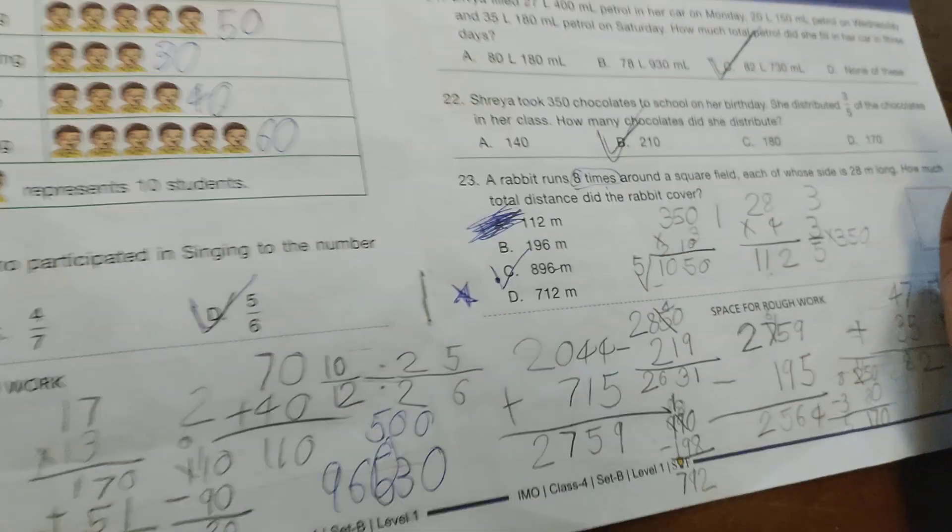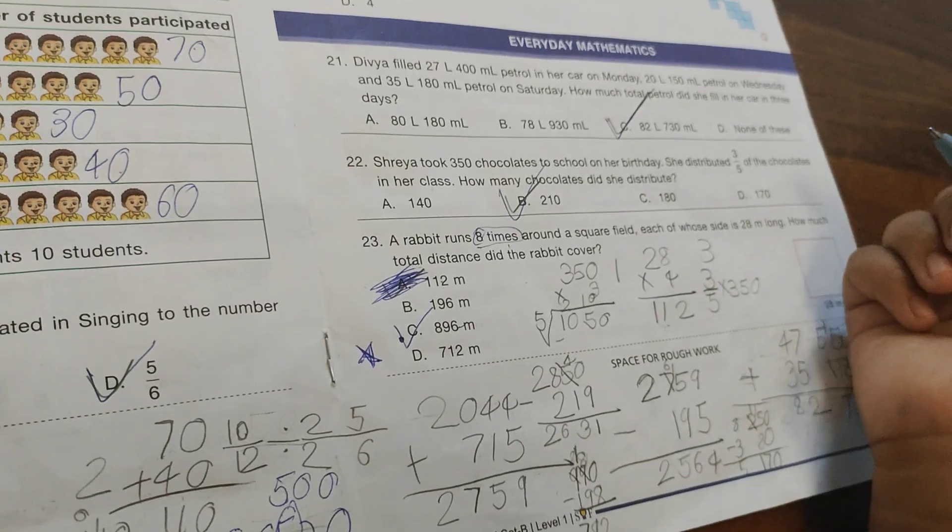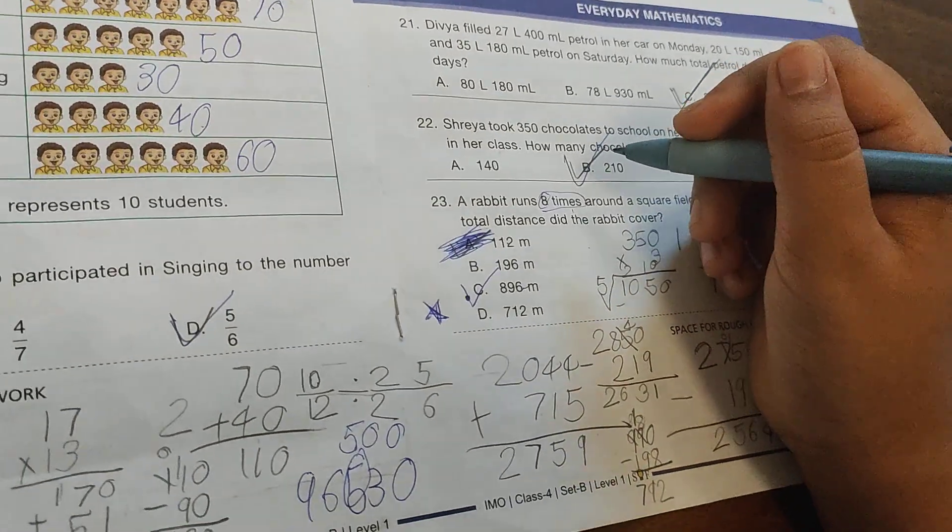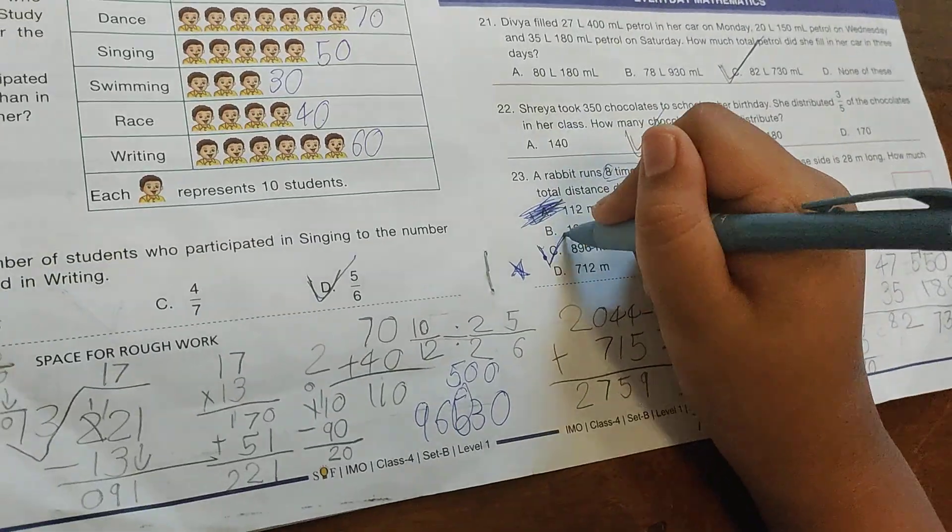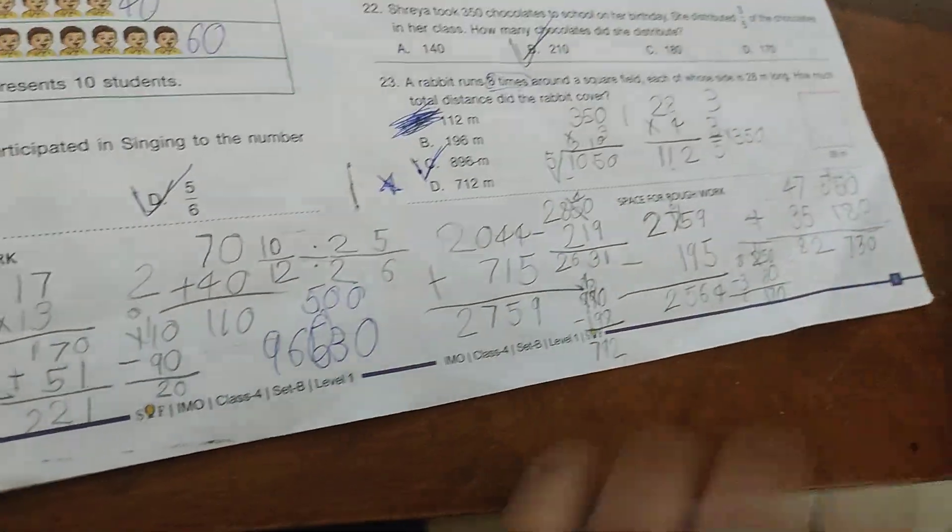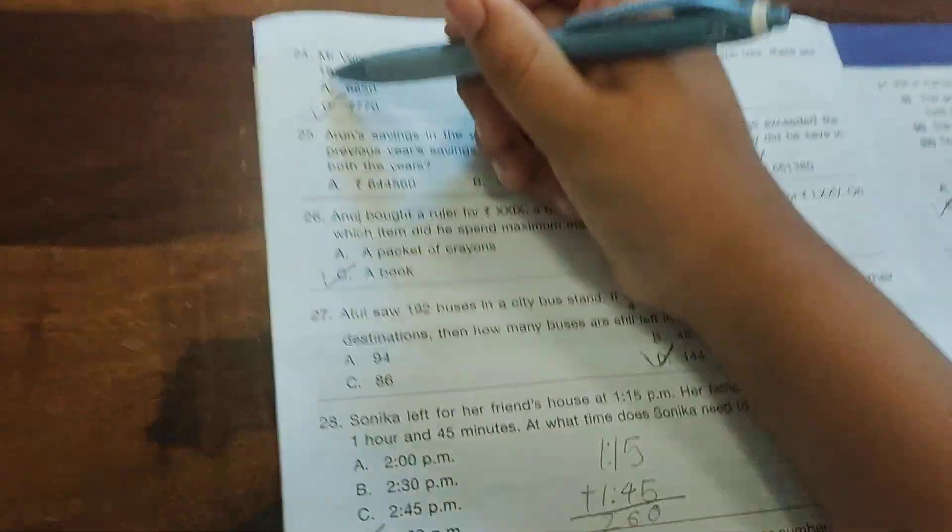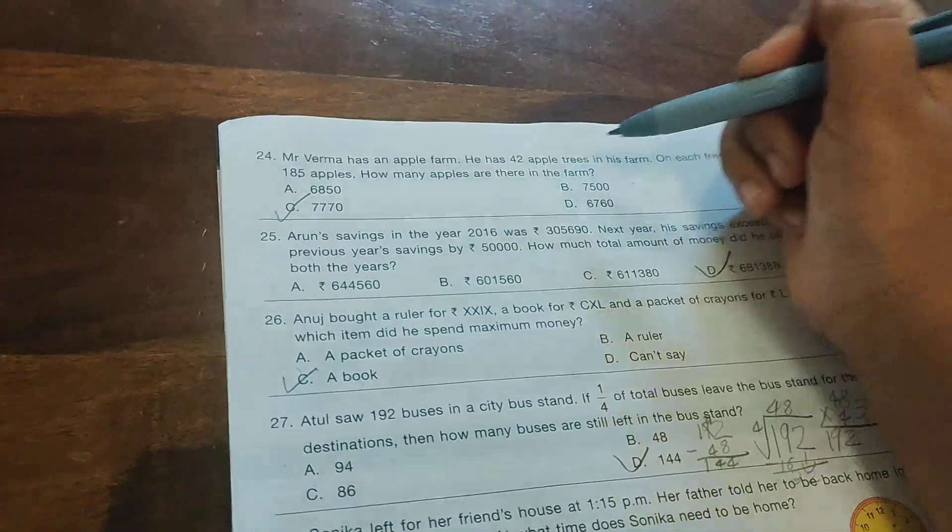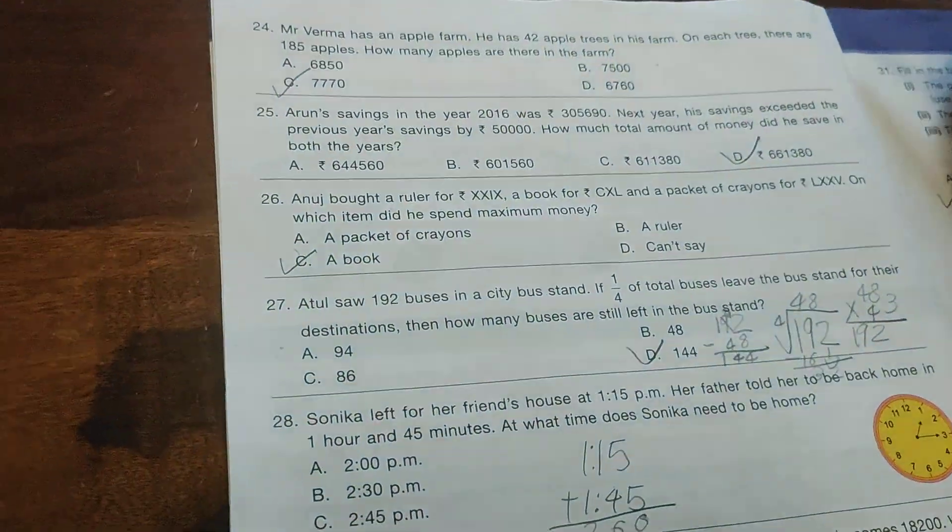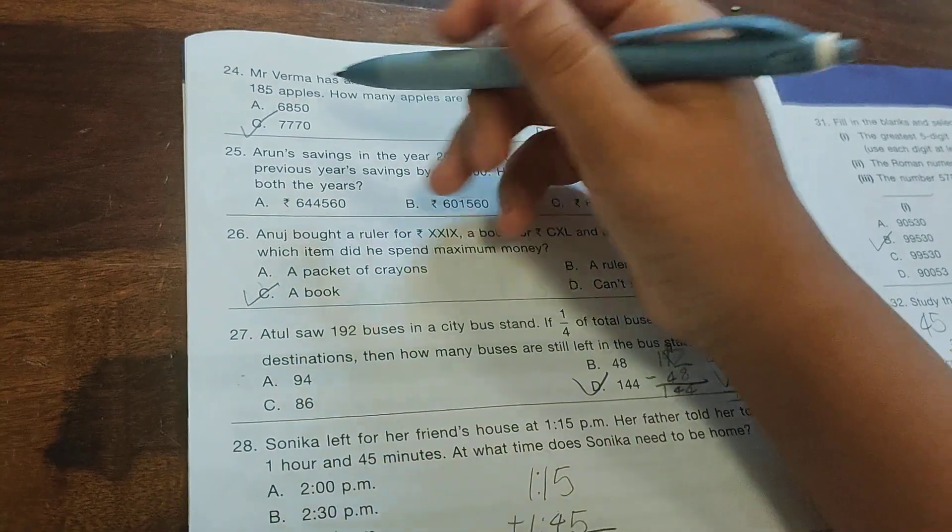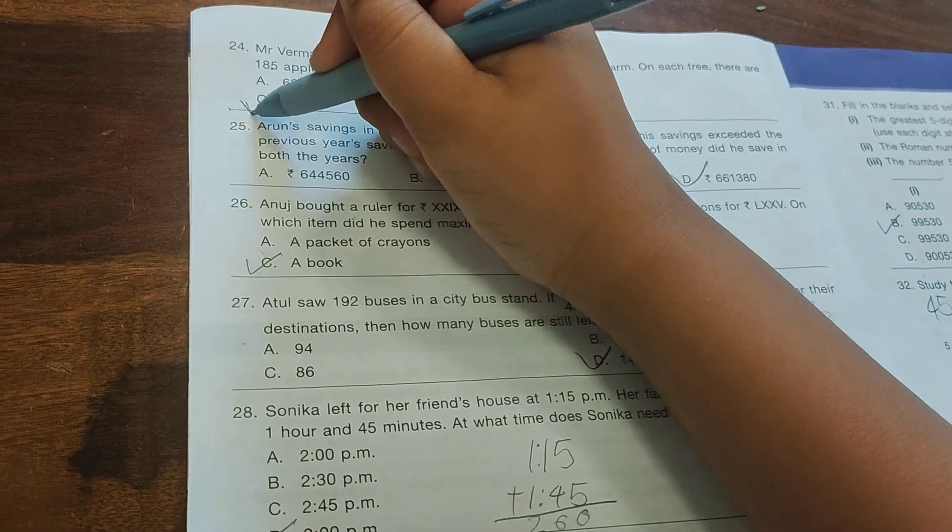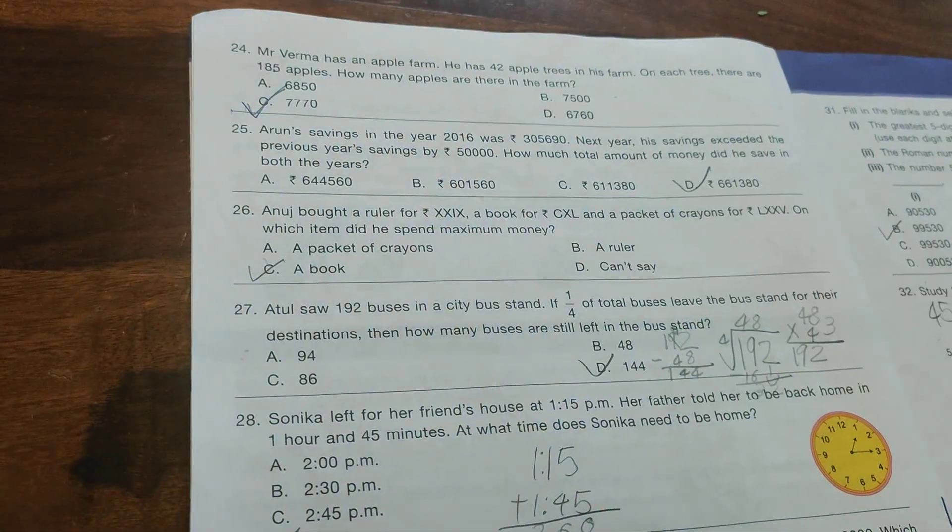Question 23: A rabbit ran 8 times around a square field, each side 28 meters long. What total distance did the rabbit cover? The option is 896 meters. Question 24: Mr. Verma has an apple farm with 42 apple trees. Each tree has 185 apples. How many apples are there in the farm? The option is 7,770.